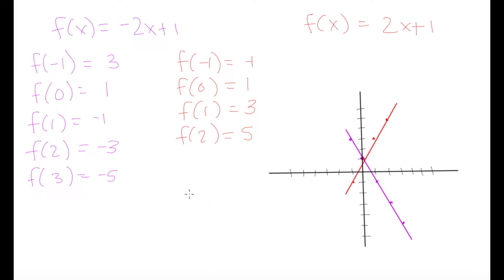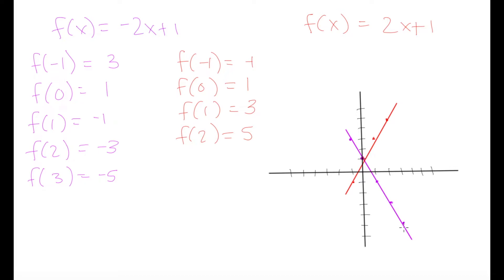We can see that when we have a negative slope — in our purple graph our slope is negative 2 — our graph is going to point downwards. You can see this graph is going downwards, whereas our red graph is going upwards. That is when we have a positive slope. Our red slope is 2, which is positive, whereas the purple slope was negative 2, which is negative.